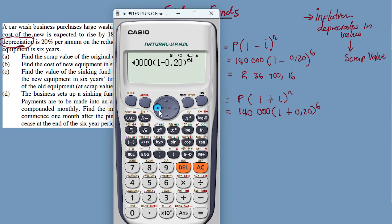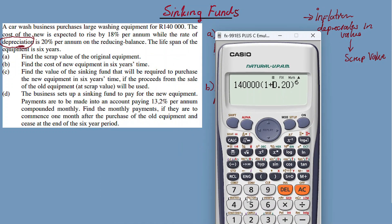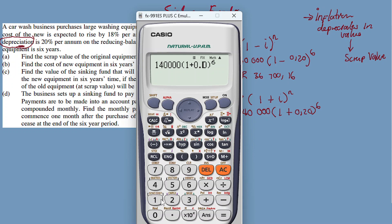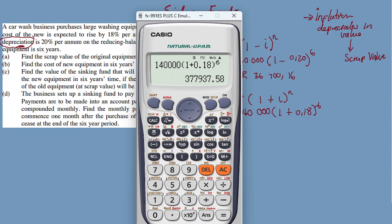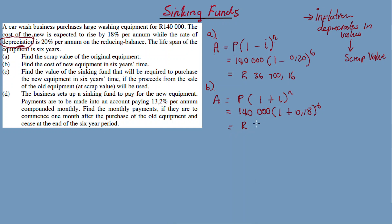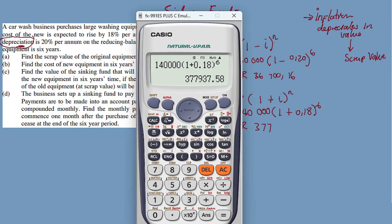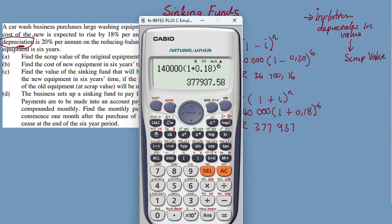So it's not 20% here — the rate expected to rise is 18%, so i = 0.18. The answer comes out to R377,937.58. That is the cost of new equipment in six years' time.